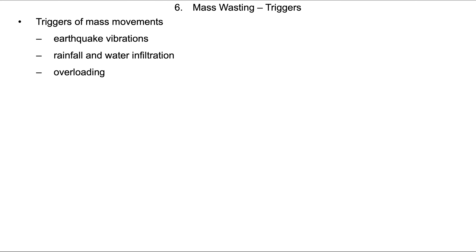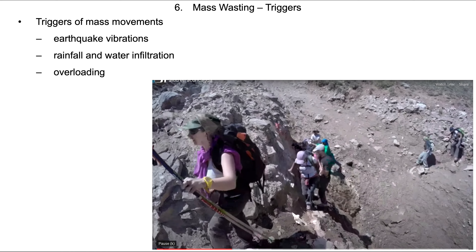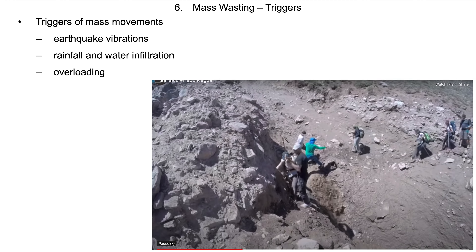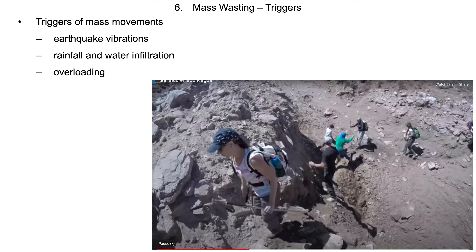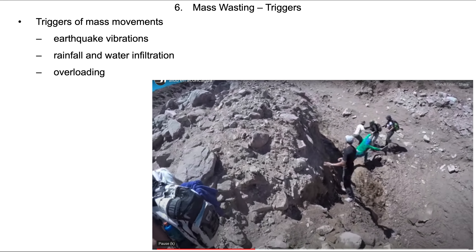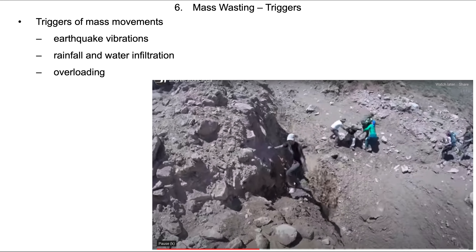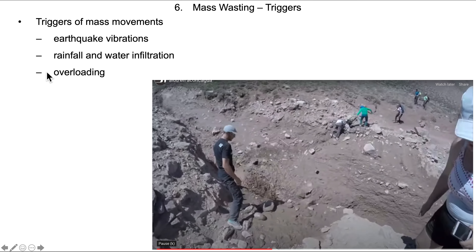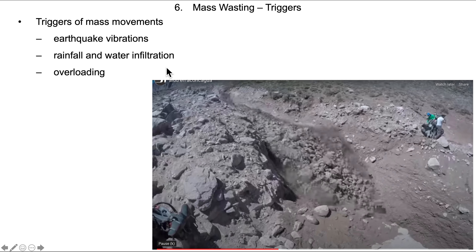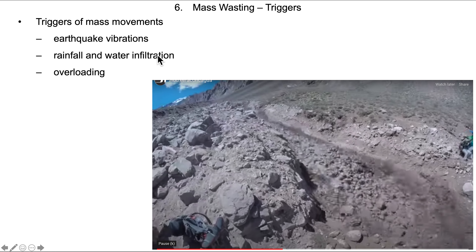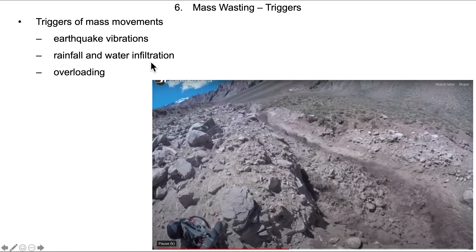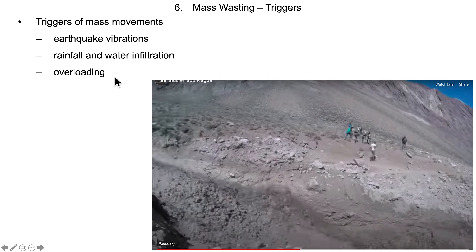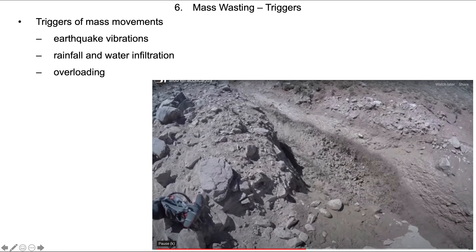What causes mass wasting? There has to be some kind of trigger — you exceed some dimension of stability and it literally falls apart, resulting in a mass wasting event. This can be initiated by earthquakes, shaking material that's sitting at the angle of repose — it just takes a little push and it goes down slope. We can also add rainfall or pump water in from below, which tends to separate and lubricate the particles until we overload the material and it slides down slope.